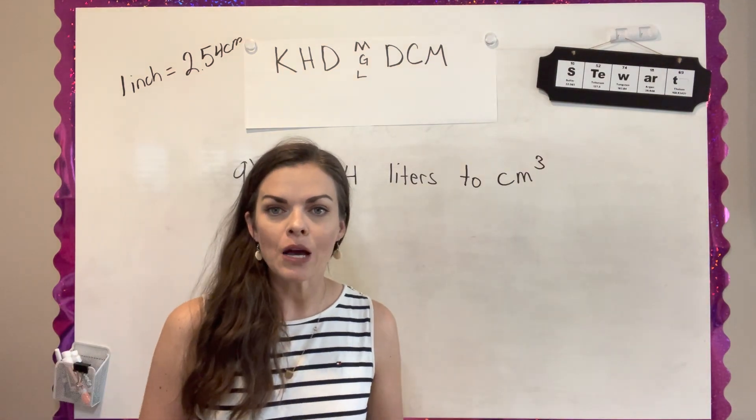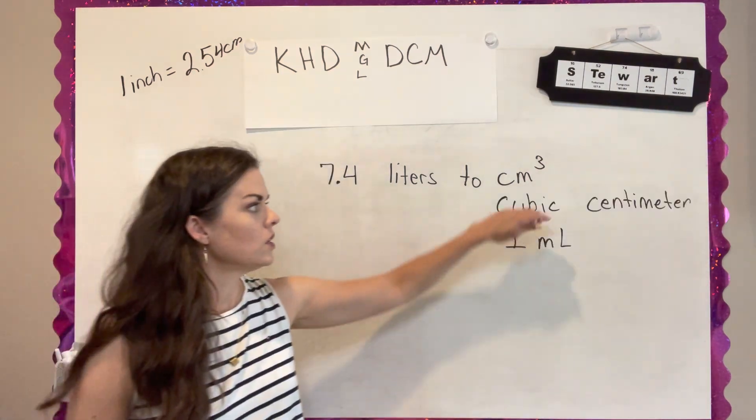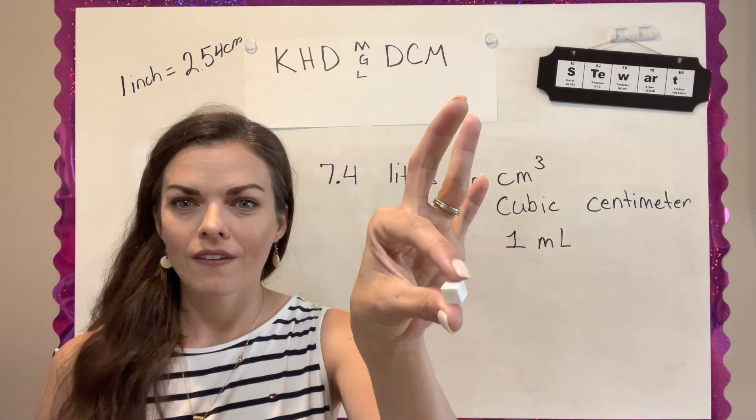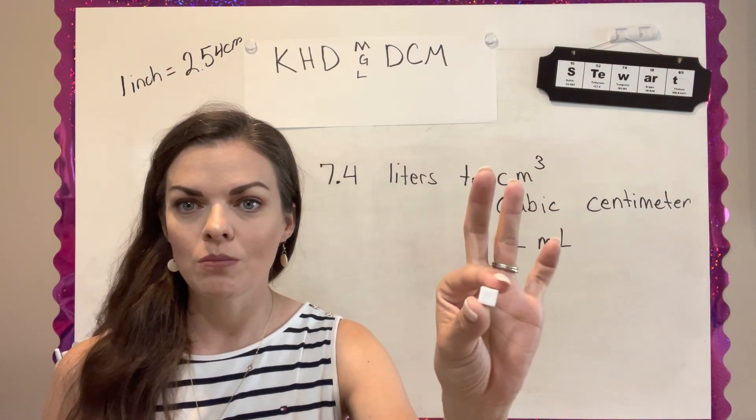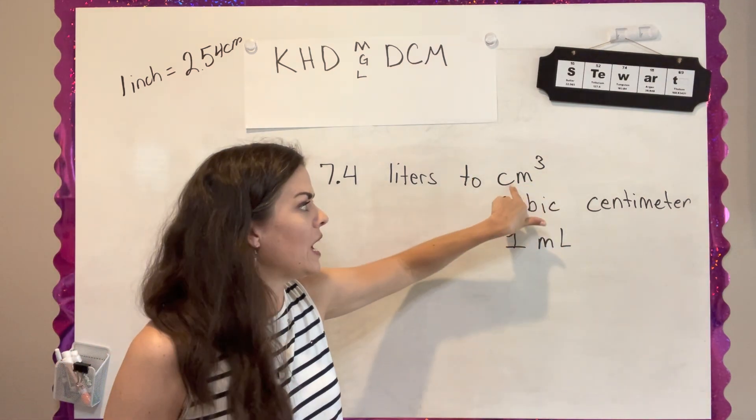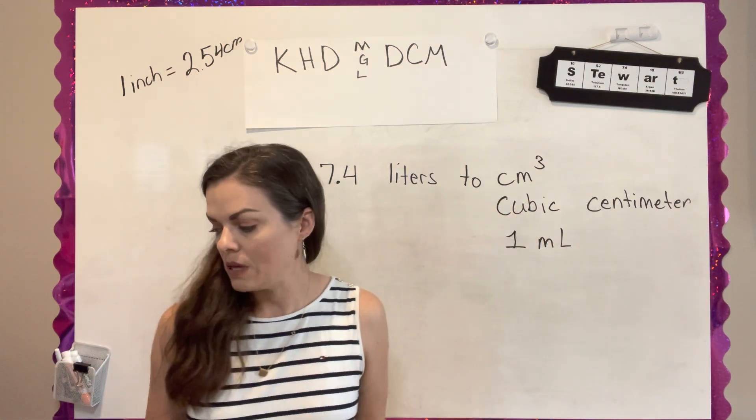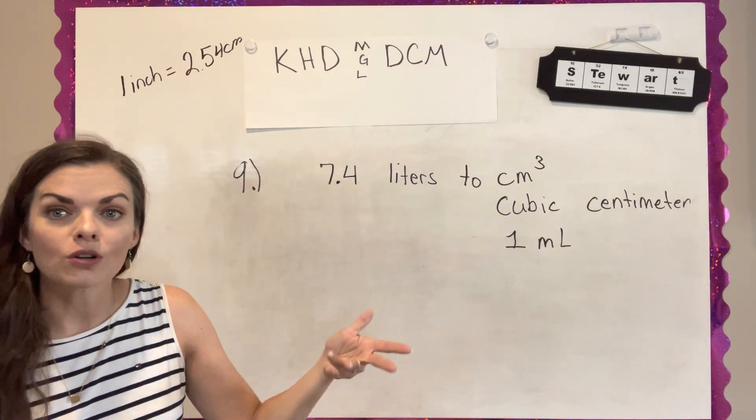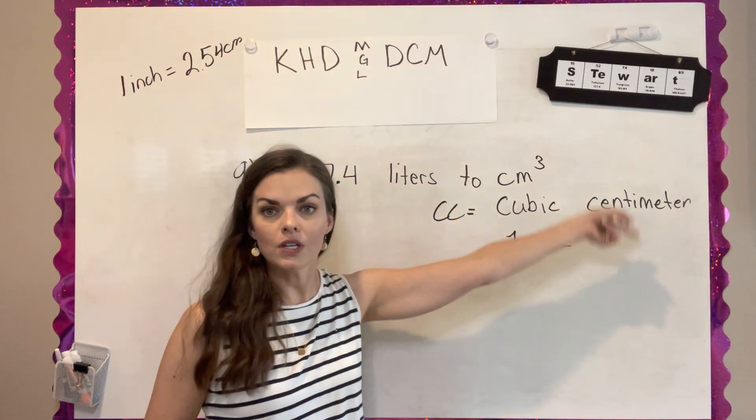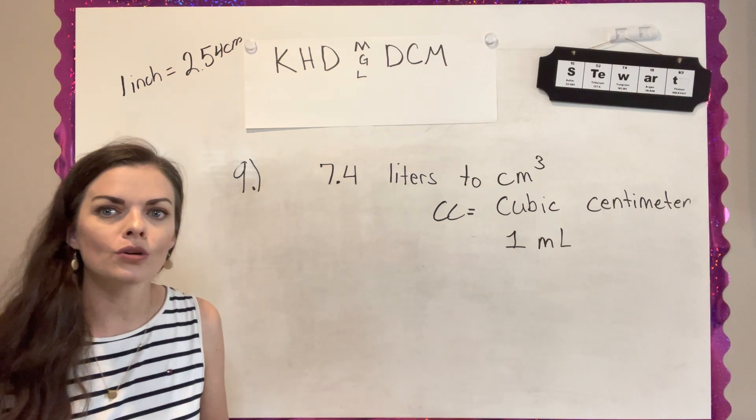For question nine, I want to introduce you to a cubic centimeter or a cc. Sometimes you'll see a measurement of a cubic centimeter. It's actually very small. And so this is a cubic centimeter. You can write a cubic centimeter, this little bitty square, as cm cubed. Sometimes though, people will say a cubic centimeter is a cc from the initials, a cc.